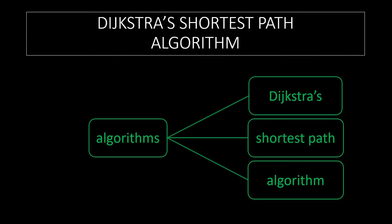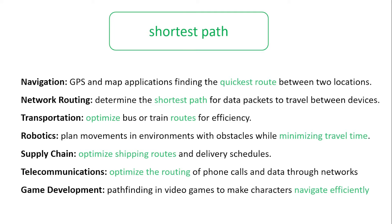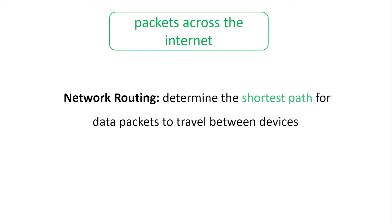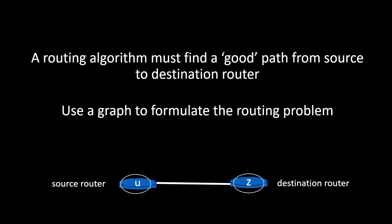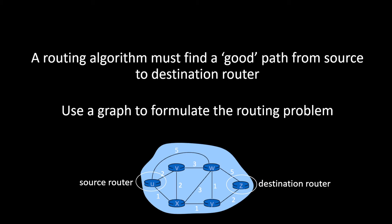Let's have a look at Dijkstra's shortest path algorithm. There are different uses, but essentially what we're looking for is the optimized route, the minimum travel time, and the shortest path. We'll use the example of network routing, which is how packets get across the internet. We want to find the quickest or cheapest route from A to B.